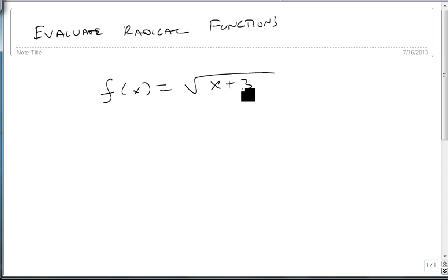For instance, one thing that we could do with this one is we could say, what's f of 6? This becomes the square root of 6 plus 3, add them together, square root of 9, which is 3. This also happens to give us a point at 6, 3. 6 input, 3 output.